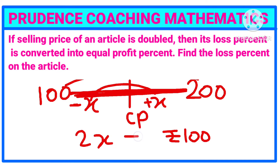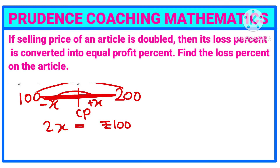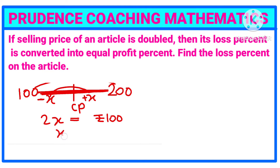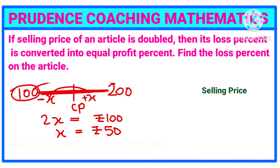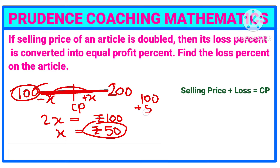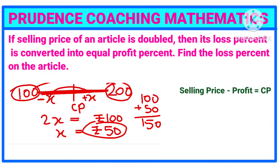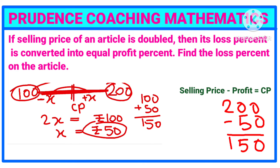So 2x equals 100 rupees, which means x equals 50 rupees. This x is the SP when there is a loss. Adding 50 to the original SP of 100, we get the cost price: 100 plus 50 equals 150 rupees. Alternatively, 200 minus 50 also gives us the cost price of 150 rupees.